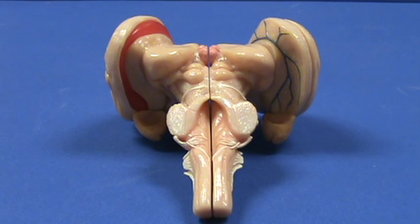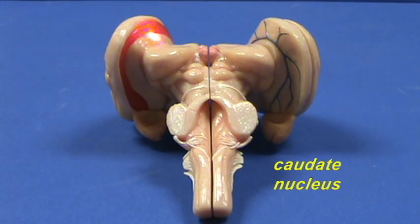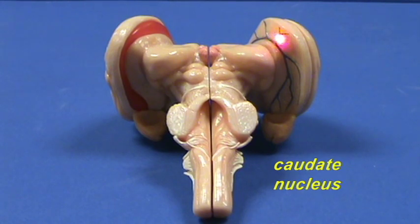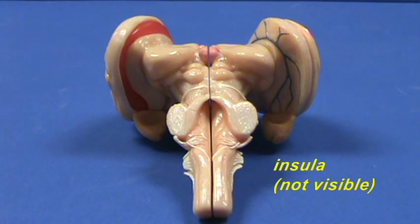Here is the caudate nucleus on one side, highlighted in red. It's also on the other side, but it's not highlighted in any way. The insula would be over here, though it's not really visible from this perspective.